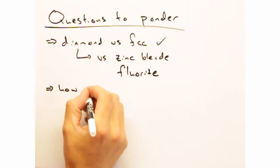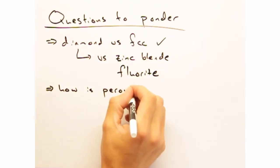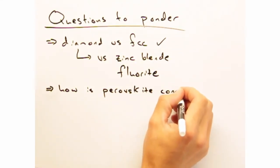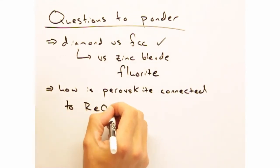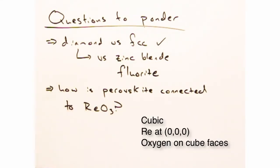Speaking of slices, in a previous video where we looked at slices, we introduced the perovskite structure. How is this structure connected to the rhenium trioxide structure?